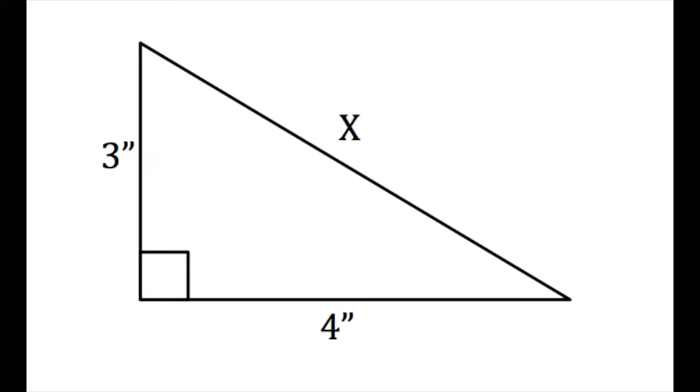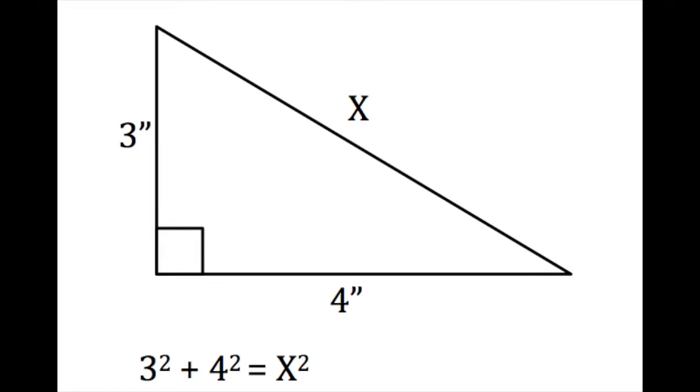and we don't know the length of the hypotenuse, we could set it up by saying 3² + 4² = x².